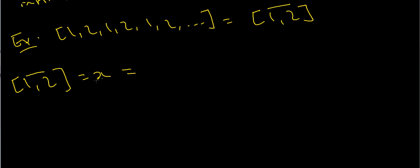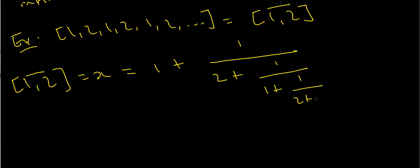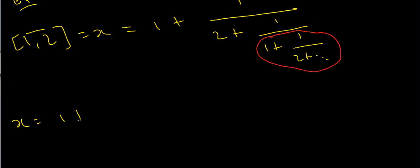If you write out this continued fraction, you get 1 + 1/(2 + 1/(1 + 1/(2 + ...))). Notice that we have 1 + 1/(2 + some stuff). If I put a circle around the tail of the fraction, that circled part is exactly the same as the whole x term. So I can replace it with x, giving x = 1 + 1/(2 + 1/x).